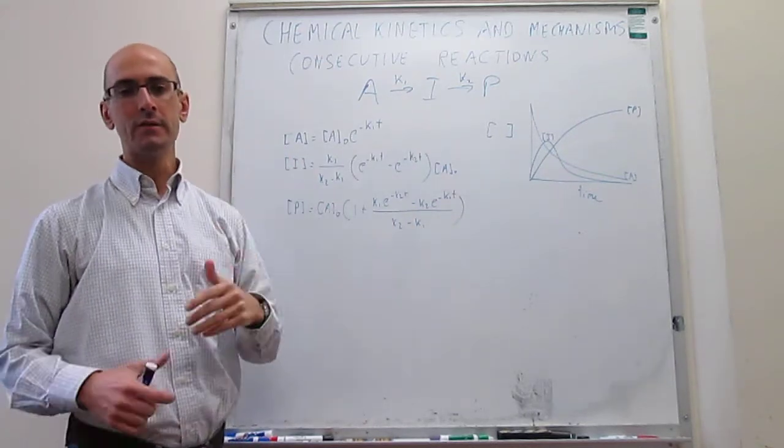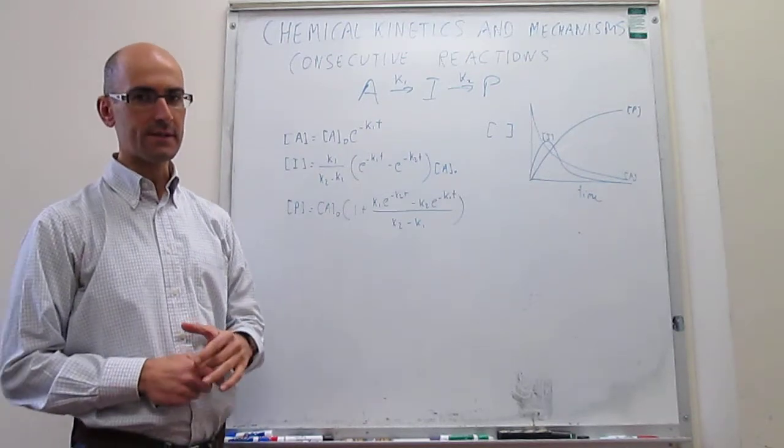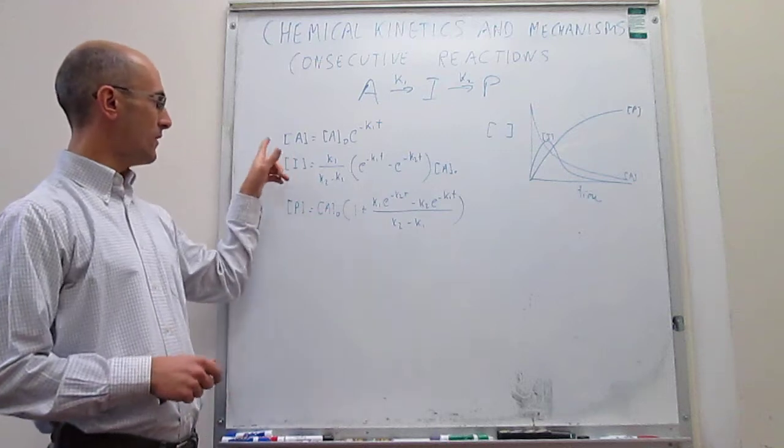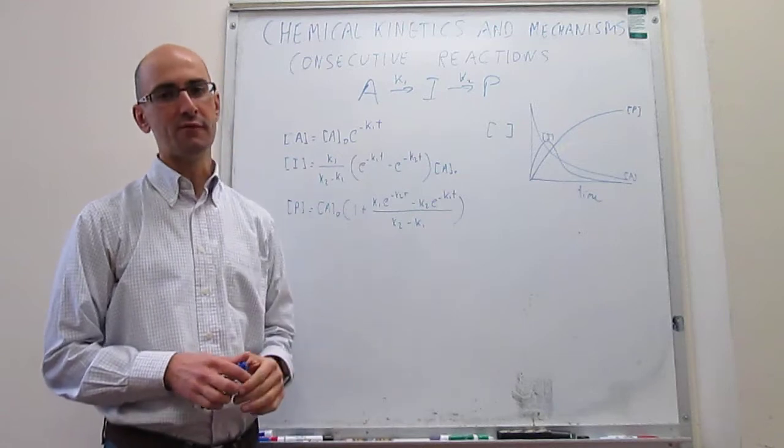And then what we've done in a prior video is derive the integrated rate laws for each one of the species intervening in the reaction: reagent, intermediate, and product. That's a graph of how these concentrations evolve in time.